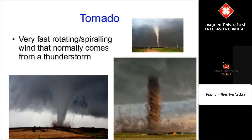Tornadoes are very fast rotating or spiraling winds that normally come from a thunderstorm. Look at these pictures of the damage of a tornado — tornadoes cause lots of damage to people's homes and cars.